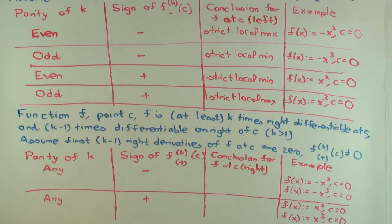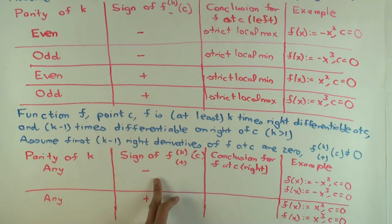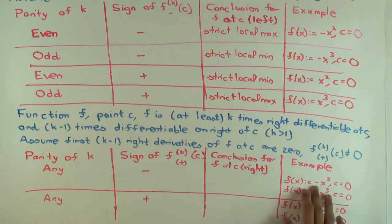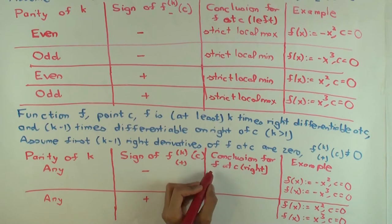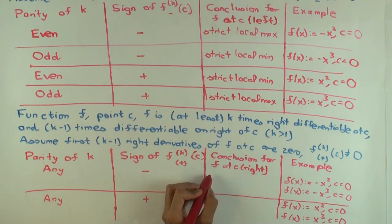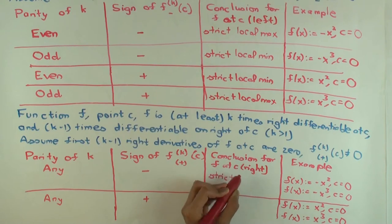So, suppose the kth right-hand derivative is negative. So that's like f(x) equals minus x squared, or f(x) equals minus x cubed. What kind of picture would you have for that? Well, it would be decreasing on the immediate right of the point. So what would you get? A strict local max.